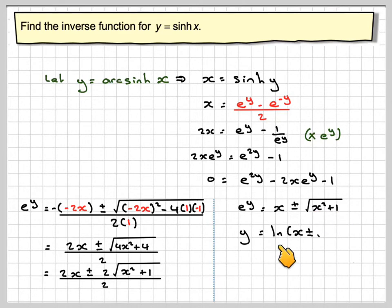So we get that y will be ln of x plus or minus the square root of x squared plus 1. Now, whatever value of x is, x squared plus 1 will be bigger than it. Therefore this solution, the ln of x minus square root of x squared plus 1, will be less than 0.